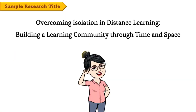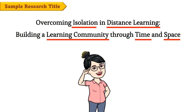For the next activity, identify the terms that should be defined. Let's say this is the title of your research study. The terms or words that should be part of your definition of terms are: isolation, distance learning, learning community, time, and space. Why are time and space included? Because these terms are ambiguous — there must be a different meaning for these terms related to distance education, so most probably these do not refer to literal clock time or physical space. By defining terminologies, it becomes easier for readers to understand the content of your research.